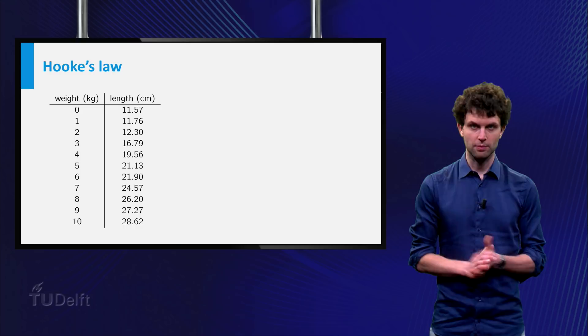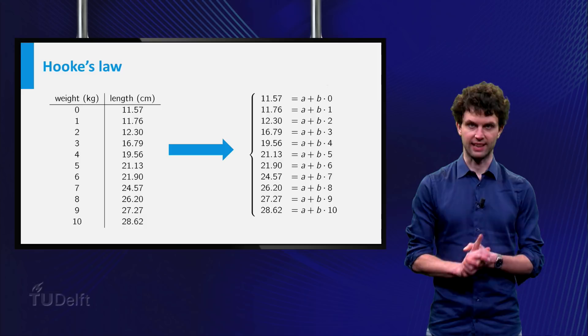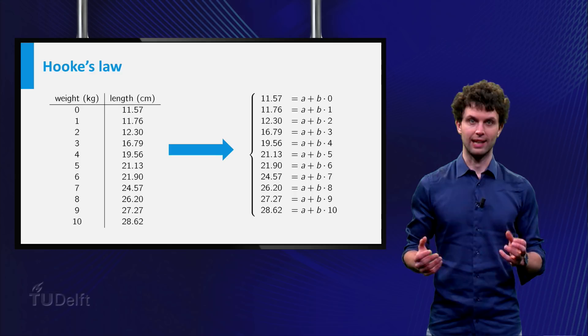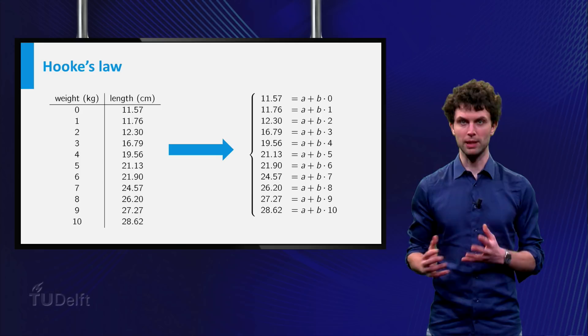All right, you obtain the list of 11 pairs (x, y). Next, if you substitute for each pair (x, y) the values of x and y in the equation y = a + bx, then you end up with a system of 11 linear equations in the two unknowns a and b.